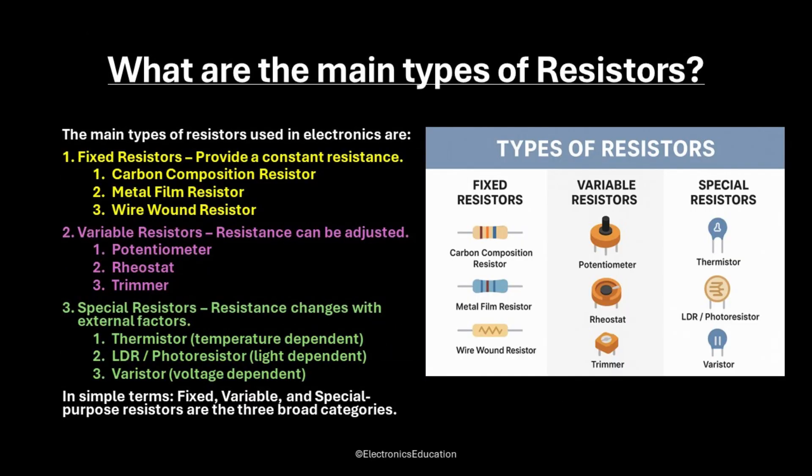So, what are the main types of resistors? The main types used in electronics are divided into three categories. One, fixed resistors — these provide a constant resistance; examples are carbon composition resistors, metal film resistors, and wire wound resistors. Two, variable resistors — resistance can be adjusted; examples are potentiometers, rheostats, and trimmers.